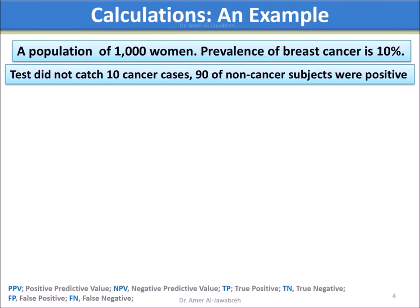Calculations — an example: In a population of 1,000 women, the prevalence of breast cancer was 10%. The test did not catch 10% of the cancer cases. At the same time, 90 of the non-cancer subjects tested positive.